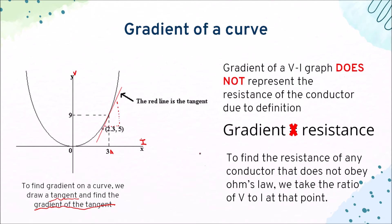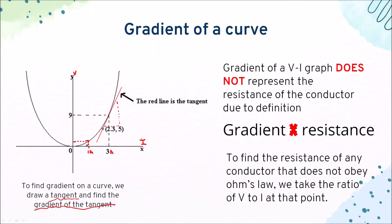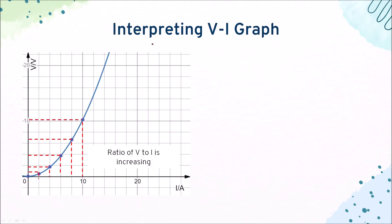To find the resistance of any conductor that does not obey Ohm's law, we take the ratio of V to I at that point. If I want the resistance at 1A, I simply read off the graph of V at 1A — whatever that value is divided by 1 gives me the resistance. We are not trying to find the gradient here. If a VI graph is a curve, the resistance is definitely not constant because it's not a straight line, so we need to determine whether it is increasing or decreasing.